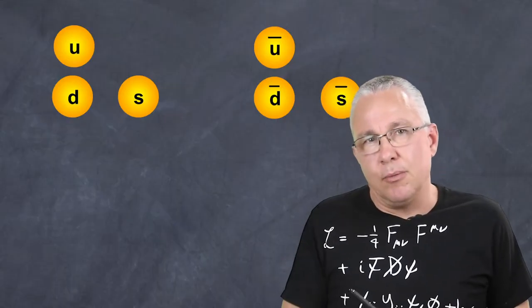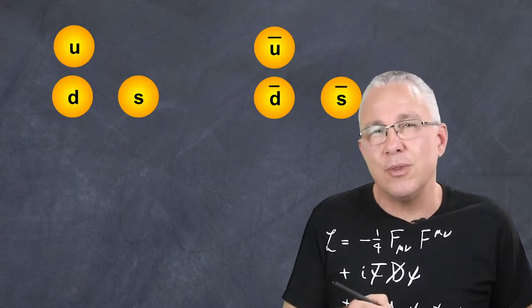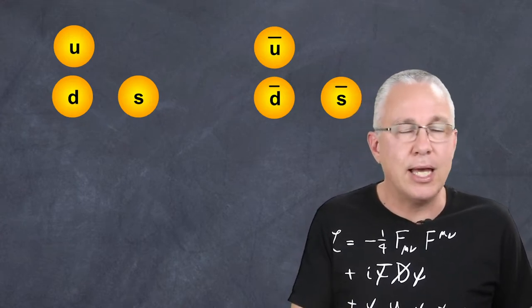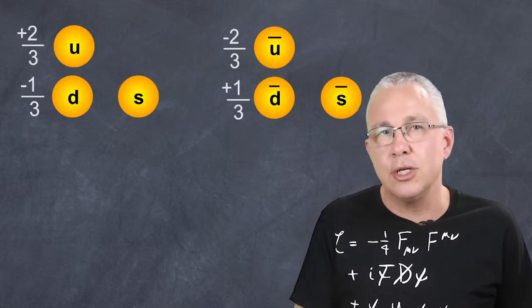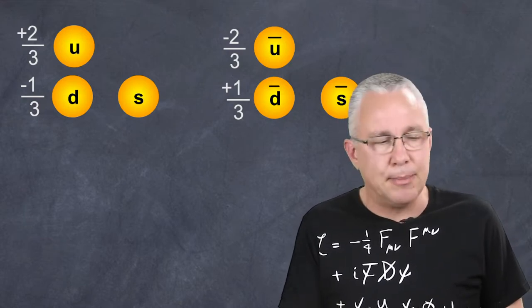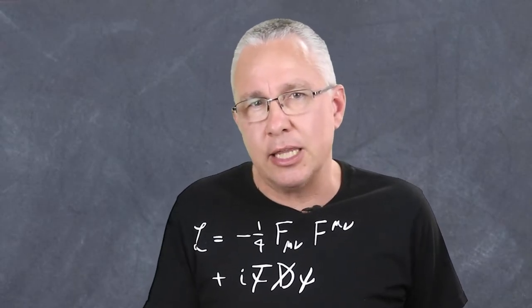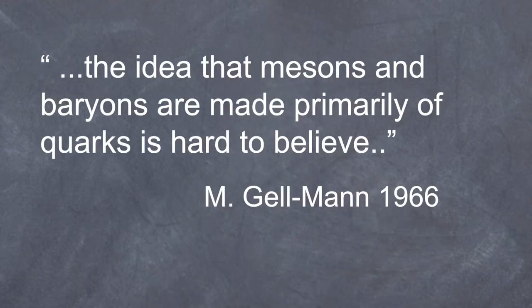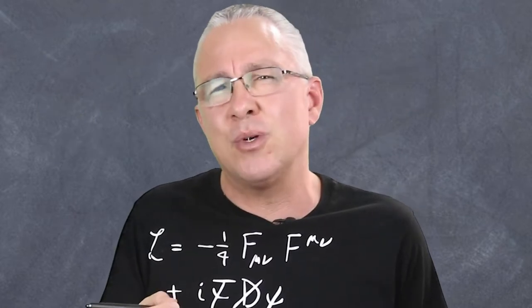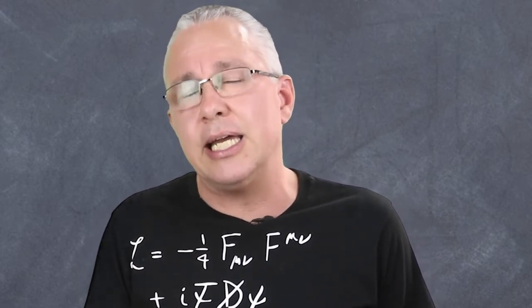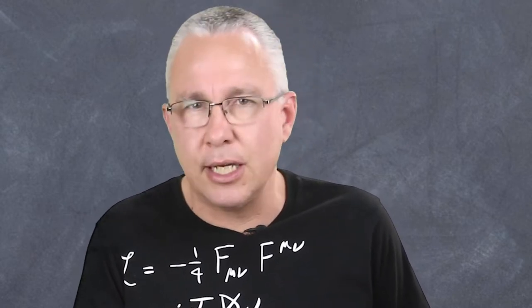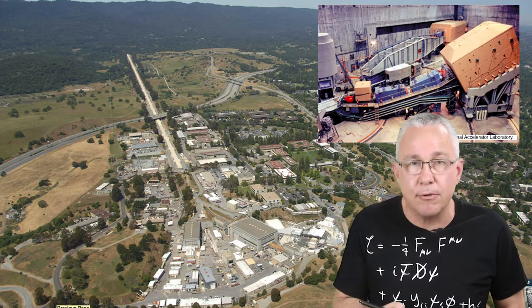The other particular problem with Murray Gell-Mann's view was that this partial charge — two-thirds for our ups and negative one-third for our downs and strange, reversed for anti-particles — was not really accepted. Murray Gell-Mann actually didn't like the model himself. He said the idea that mesons and baryons are made primarily of quarks is hard to believe. In other words, it was a mathematical principle to explain the particles, but he didn't think it necessarily existed in reality. Well, that was going to soon change, and how? We need to talk about the experiments.